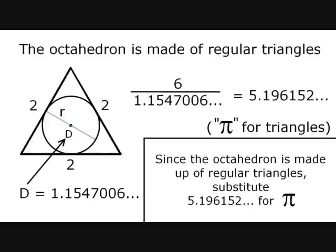An octahedron is made up of regular triangles, and because of that, for the purposes of using the volume formula, we're going to calculate basically pi for triangles, or a triangle's constant ratio of its perimeter to its diameter. But triangles don't have a diameter.